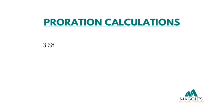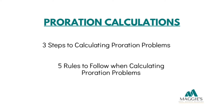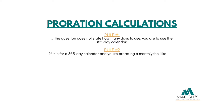For proration problems, there are three easy steps to follow and five rules to counting dates. Let's start with the five rules to counting dates. Number one: if the question does not state how many days to use, you are to use the 365-day calendar. Number two: if it's for a 365-day calendar and you're prorating a monthly fee like rent or an HOA payment, you will divide by the number of days in the month given for closing. So if the closing is scheduled for sometime in May, you'll use 31 days since May has 31 days. And if the closing is in February, you'll use 28 days and so on.